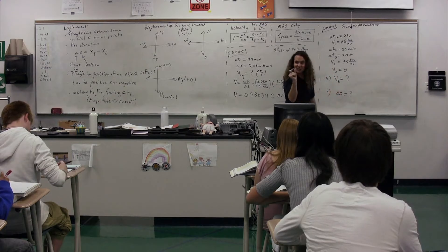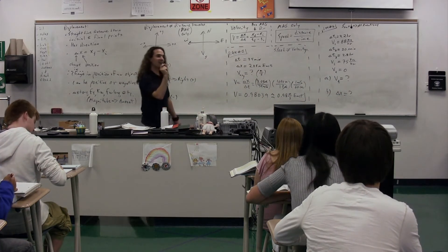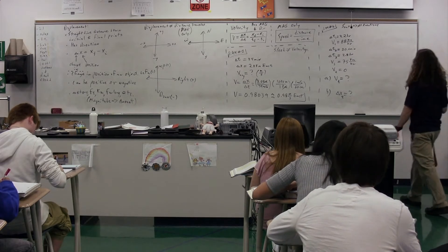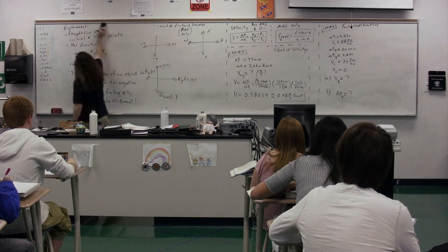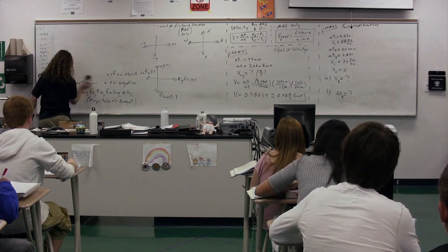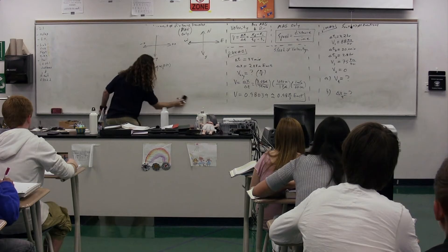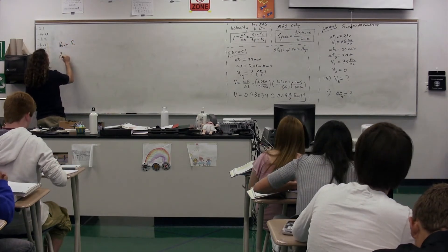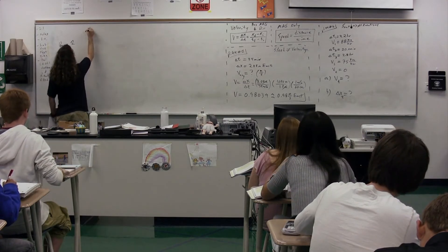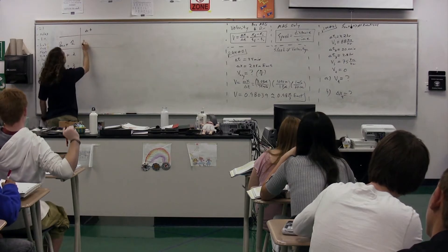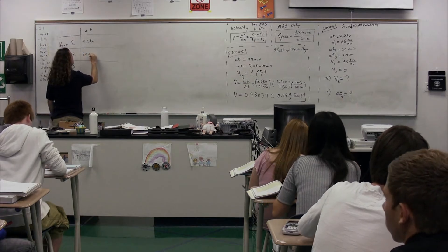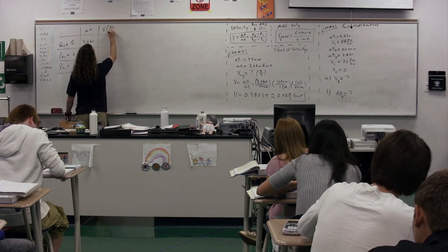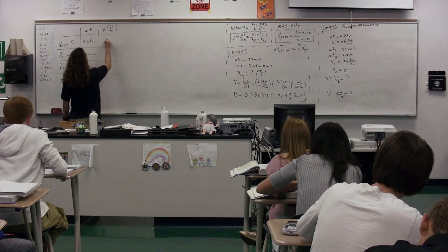The average velocity is a question mark — V total equals question mark. I'm going to put T for total, because that's the specific velocity we're looking for. Part B: what is the displacement for the total trip? That would be delta X with subscript T — total. There are a whole bunch of different displacements, so we need to specify which one we're looking for: delta X total, the displacement total.